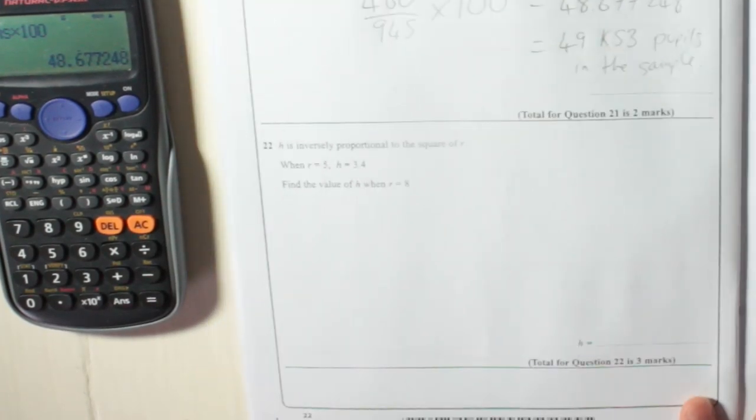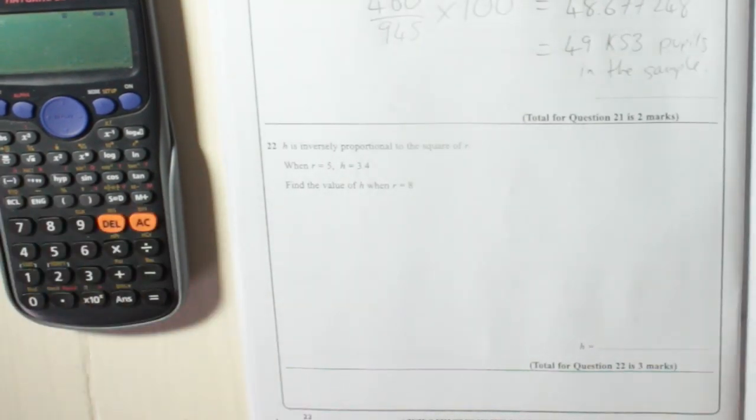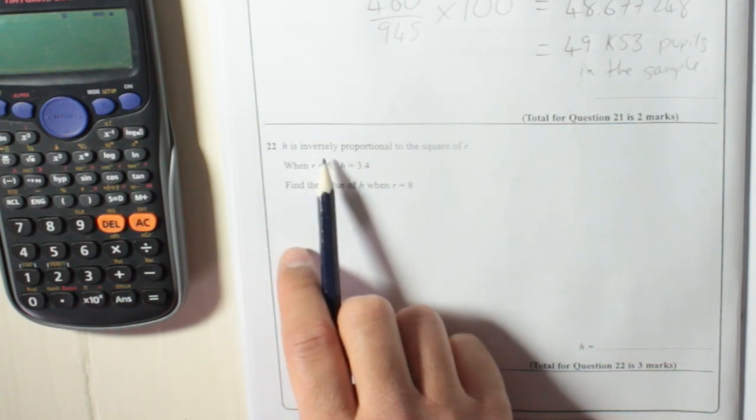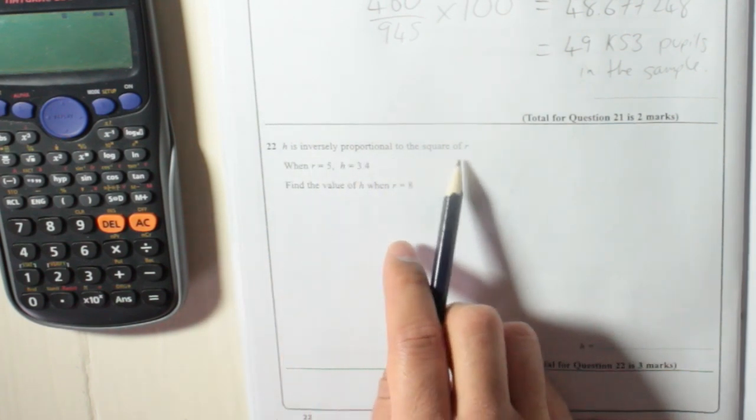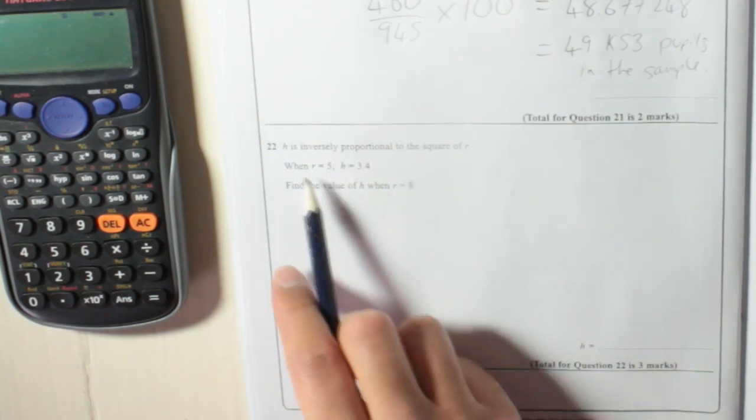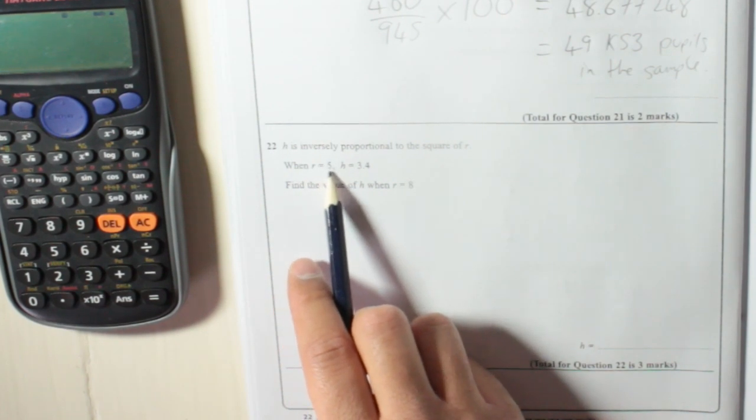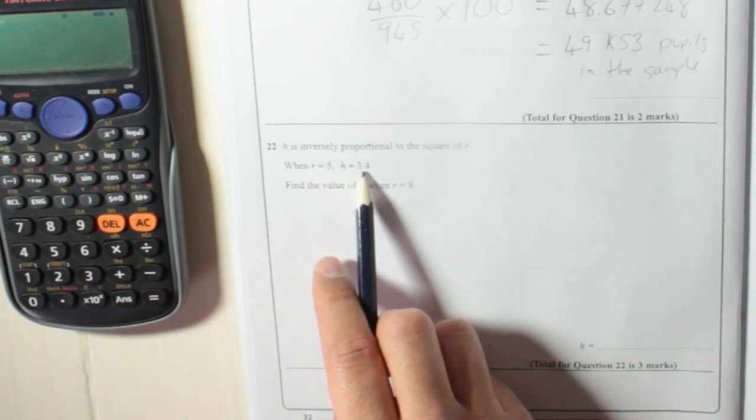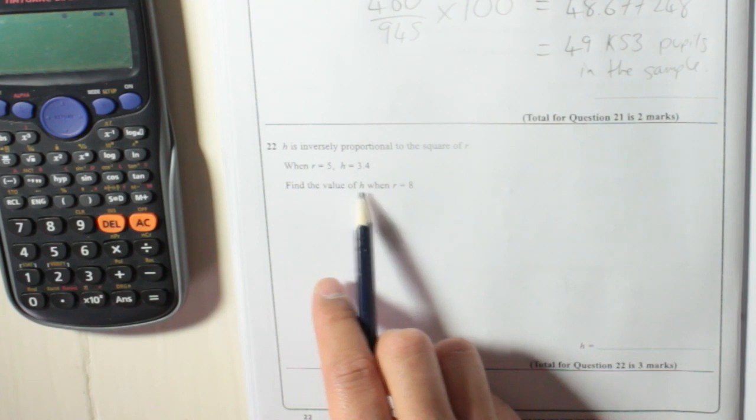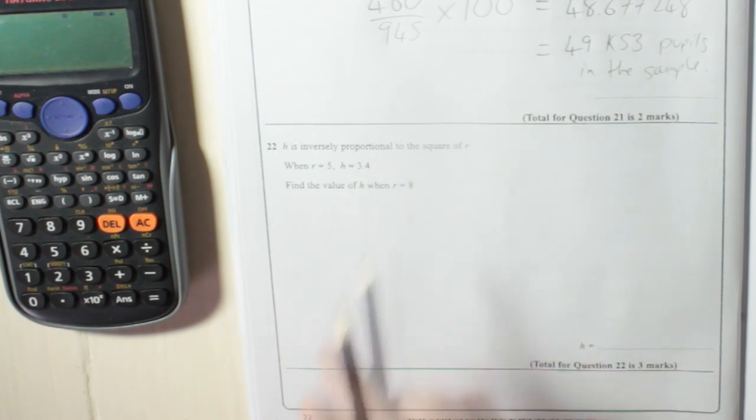Question 22 is a proportion question. h is inversely proportional to the square of r. When r equals 5, h equals 3.4. Find the value of h when r equals 8.